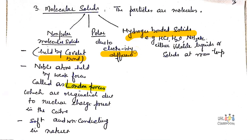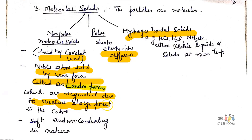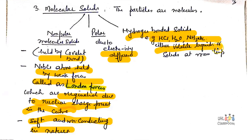In polar molecular solids, attraction arises due to electronegativity difference. Hydrogen-bonded molecular solids are held by hydrogen bonds and are solids at room temperature. Non-polar solids, such as noble gas atoms, are held by weak London forces, which originate due to the nuclear charge present in the center. Non-polar solids are soft and non-conducting. Polar solids are held together due to electronegativity difference, and hydrogen-bonded solids are either volatile liquids or solids at room temperature.